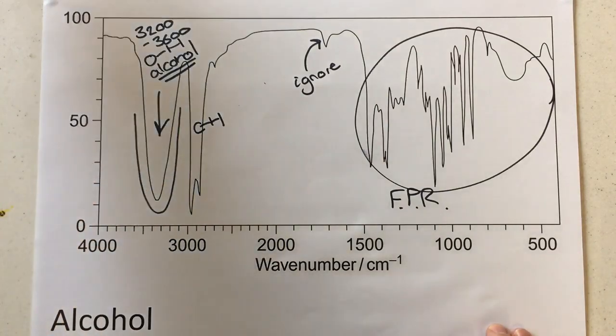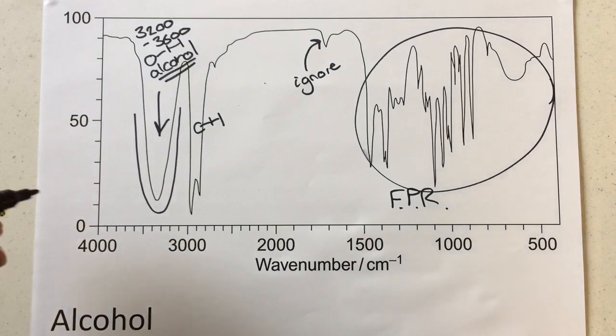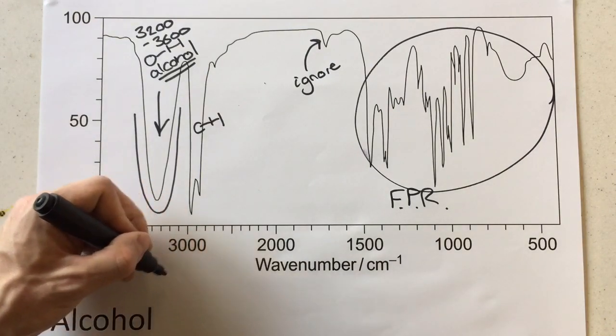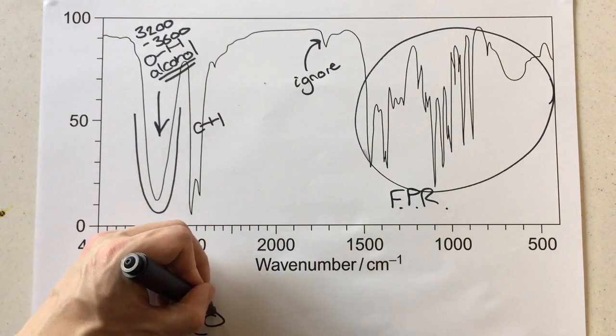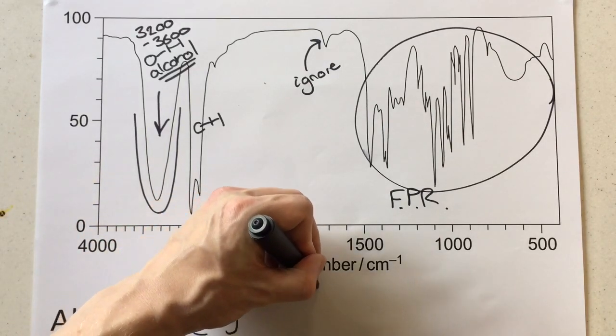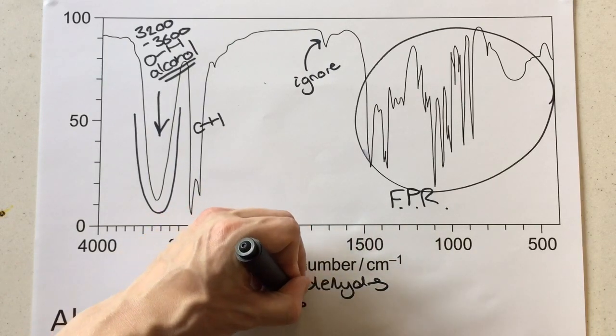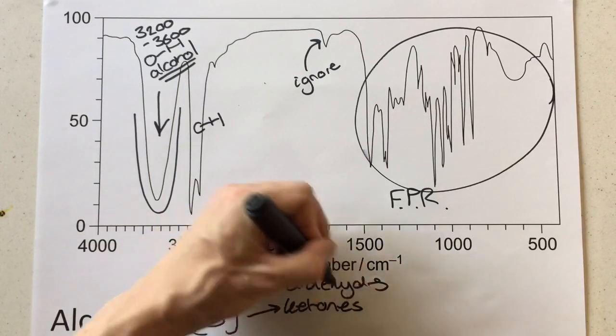Well, you could actually use this to monitor the progress of a chemical reaction because you could take some of your sample and you could see, for instance, if you were oxidizing an alcohol. We know that alcohols can oxidize to three different things: they can oxidize to aldehydes, they can oxidize to ketones—obviously this depends on the classification of alcohol—but they can also oxidize to carboxylic acids.